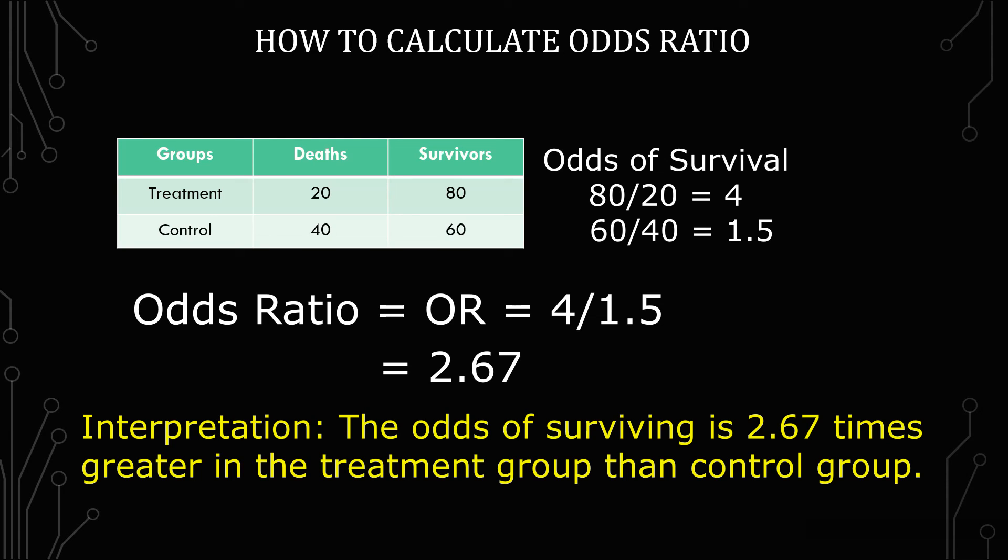Now, if you were to flip that to 1.5 over 4, you would just have to make sure that your interpretation was also consistent.